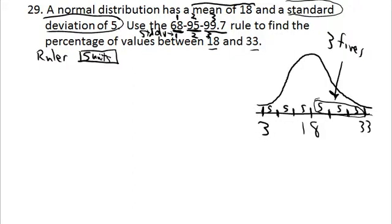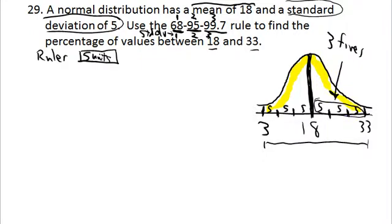So you have to look at it like that. As I'm reading and thinking about this problem, I'm doing a little sketch to guide me. According to the 68-95-99.7% rule, 99.7% of the area is captured between 3 and 33, since that spans 3 standard deviations in both directions.